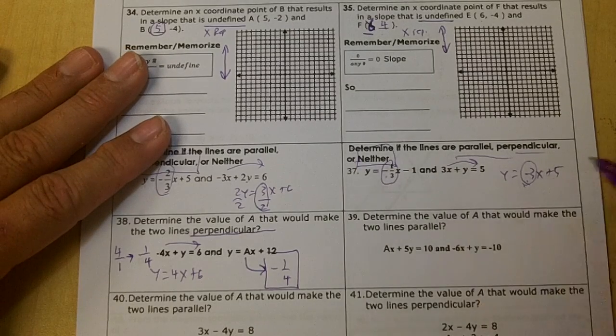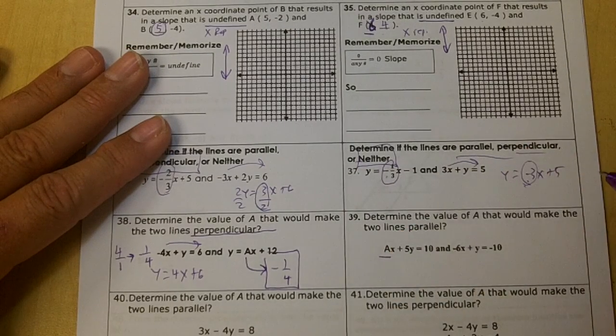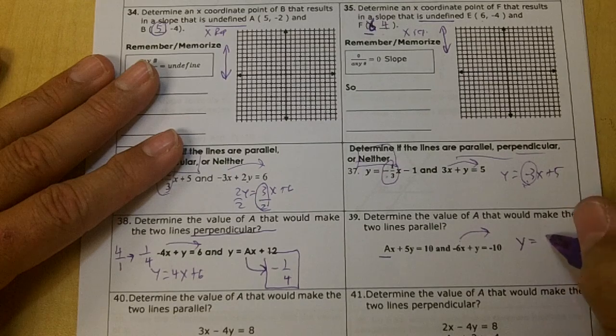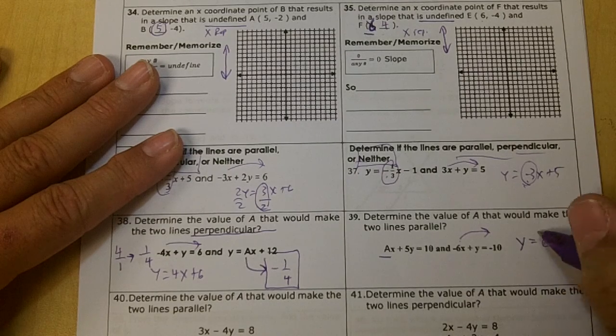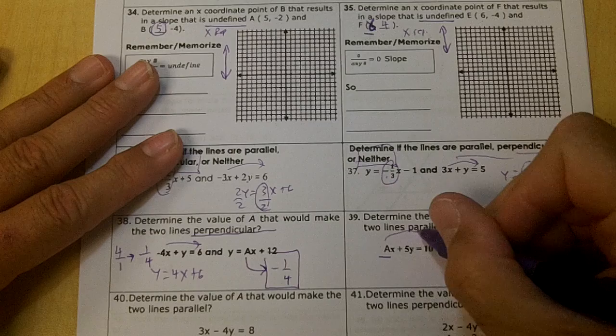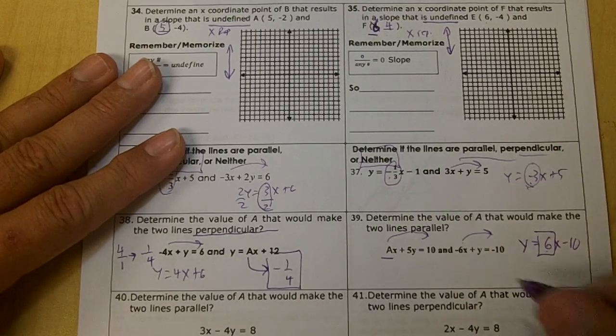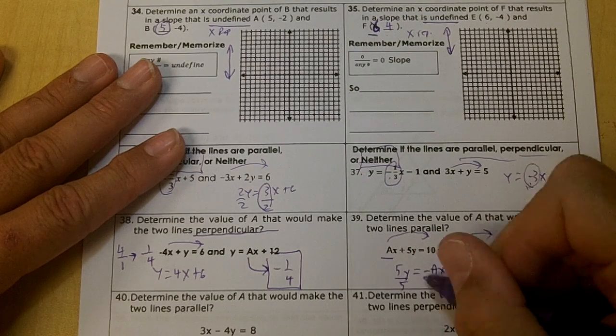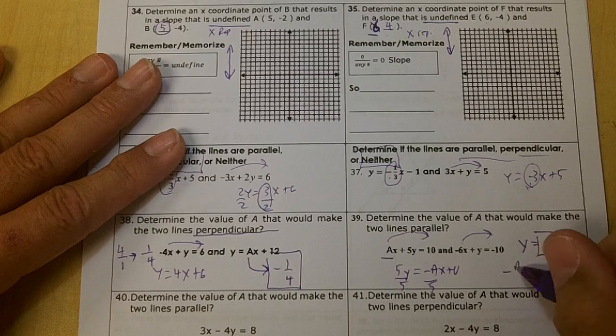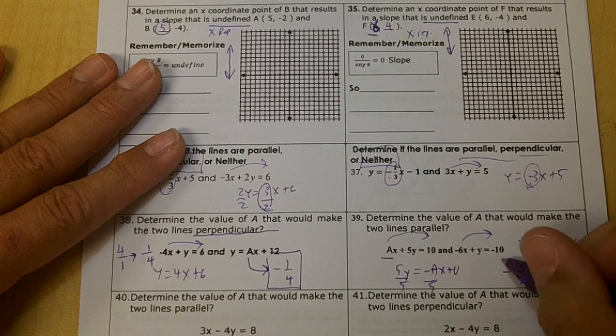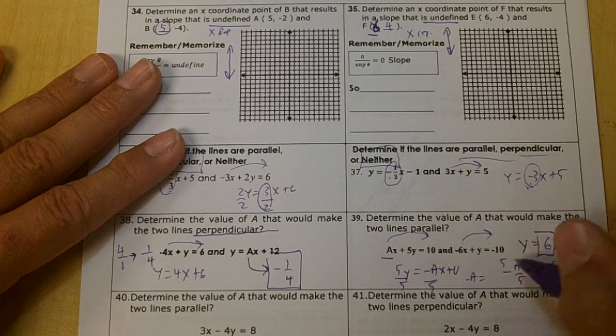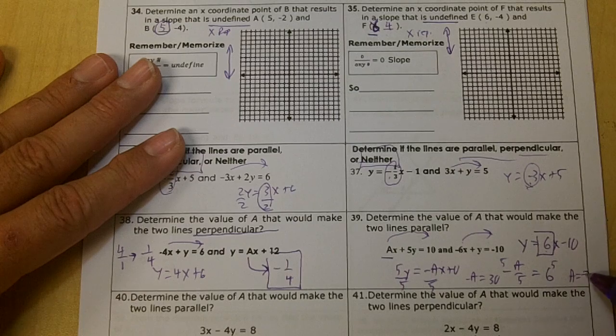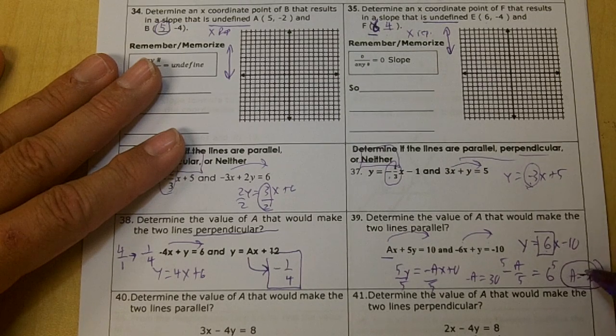Determine the value of A that would make the two lines parallel. So we want this to be parallel. I'm going to move the 6 over. So y equals 6x minus 10. I need my slope to be 6. Move that over. You would get 5y equals negative 8x plus 10. Divide by 5. So negative A over 5 needs to equal 6. Multiply by 5. Negative A equals 30. So A is going to end up being a negative 30. That was a blast. Negative 30.